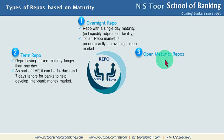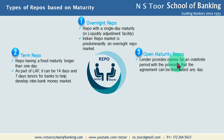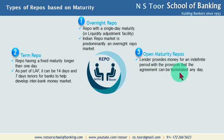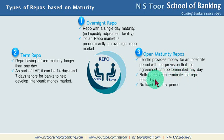The third type of repo is called open maturity repo. As the name suggests, the lender provides money for an indefinite period because it is open maturity — there is no definite maturity. The lender, for example the Reserve Bank of India, provides money for an indefinite period with the provision that the agreement can be terminated any day by either party — the fund-borrowing bank or the fund-lending bank. So in open maturity repos, both parties can terminate the repo each day.